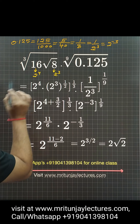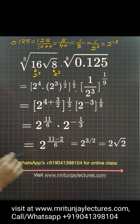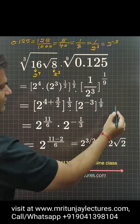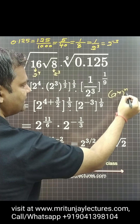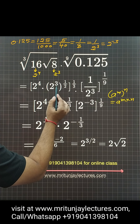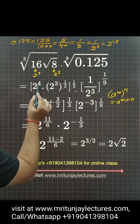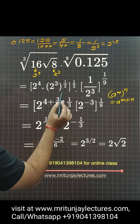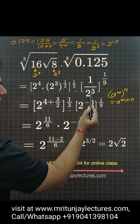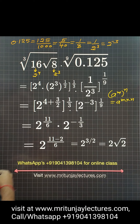So we have 2 to power 3, to whole power 1 by 2, into 2 to power 4, to whole power 1 by 3. Now using the rule that a to power m, to whole power n equals a to power m into n — applying here: 3 into 1 by 2 gives 3 by 2. Also, 1 upon 2 to power cube is written as 2 to power minus 3, to whole power 1 by 9.